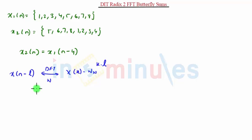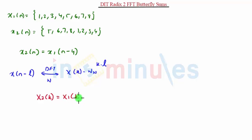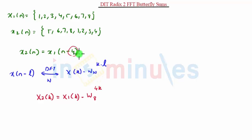Thus, in this case, we can write X2(k), the DFT of x2(n), as equivalent to X1(k) multiplied by W8 raised to 4k, since the sequence is shifted by four units.